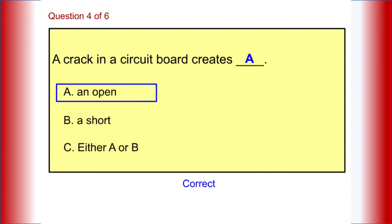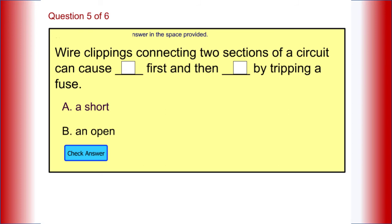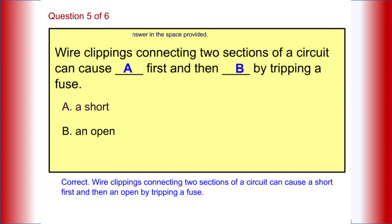Wire clippings connecting two sections of a circuit can cause what first, and then what, by tripping a fuse? Wire clippings connecting two sections of a circuit can cause a short first, and then an open, by tripping a fuse.